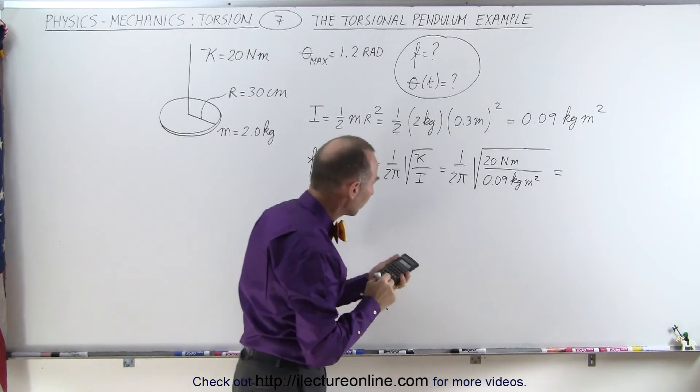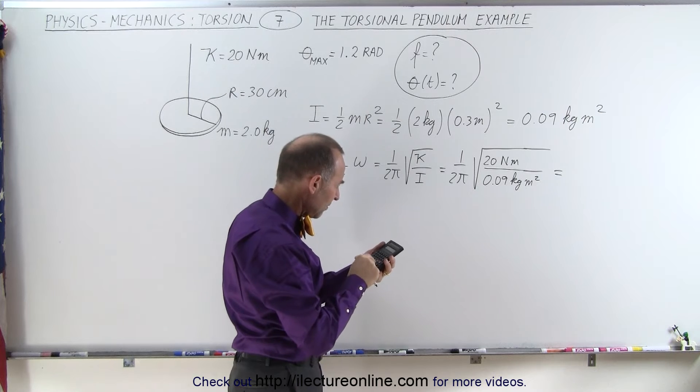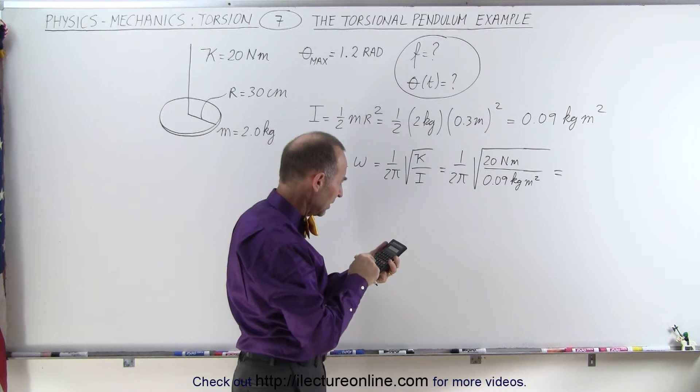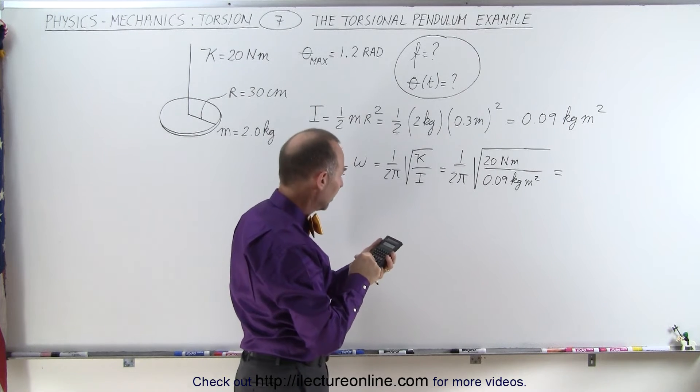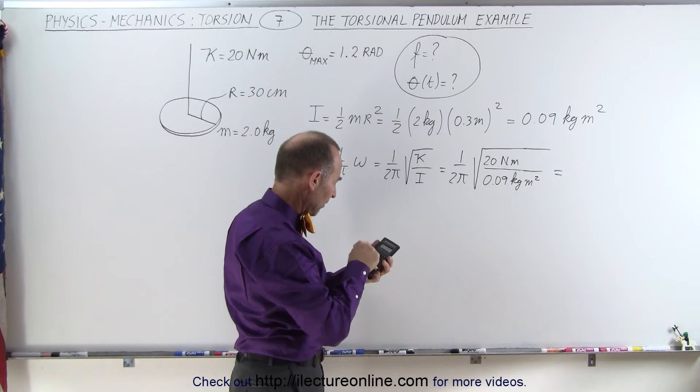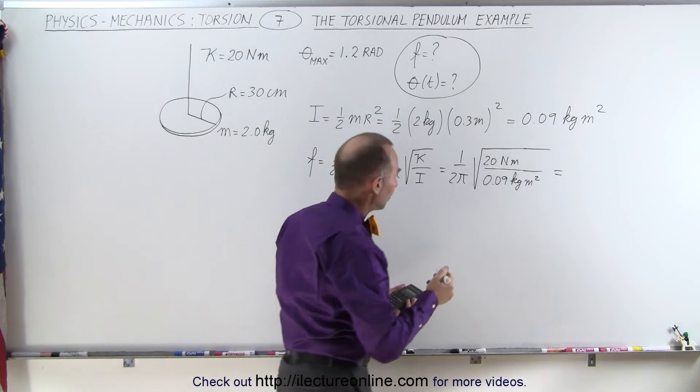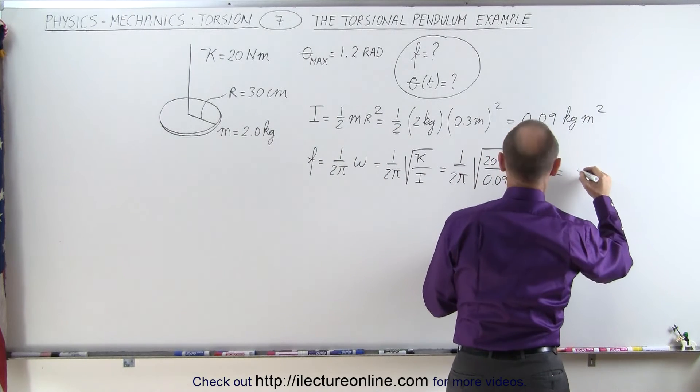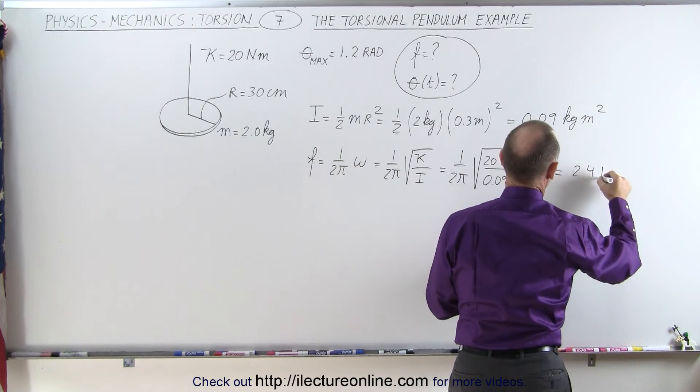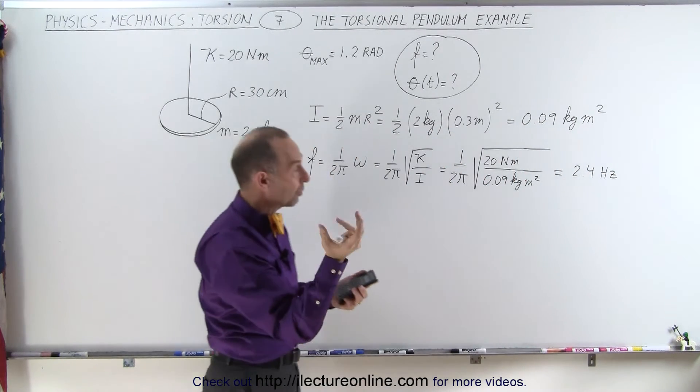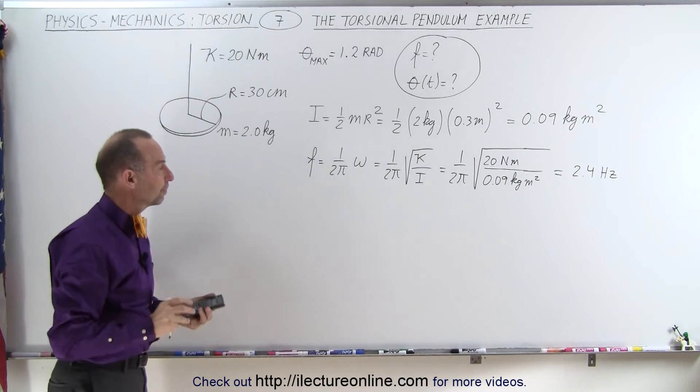Let's see what that equals. 20 divided by 0.09, take the square root of that, divide by 2, divide by π, and we get 2.4 Hertz. So that would be the frequency of oscillation.